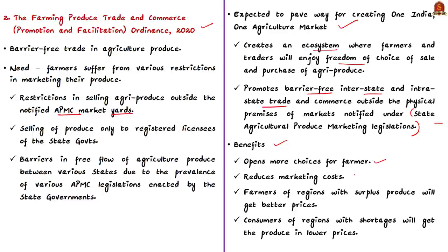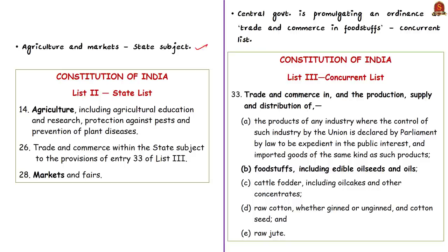The ordinance opens more choices for farmers and can reduce marketing costs. Farmers will not be charged any cess or levy for sale of their produce. Note that agriculture and markets are state subjects, meaning state governments have exclusive power to legislate on these matters. The central government is promulgating this ordinance based on the fact that trade and commerce in foodstuffs is listed in the concurrent list. The central government clarified that APMC markets are not disturbed but the ordinance expands their reach across the country.